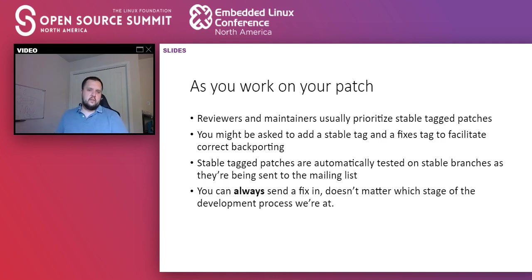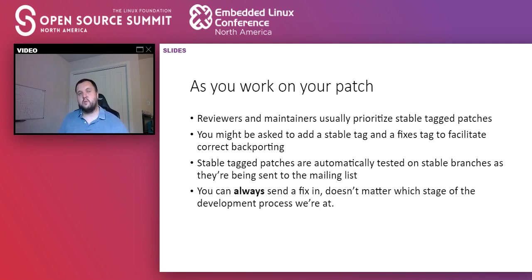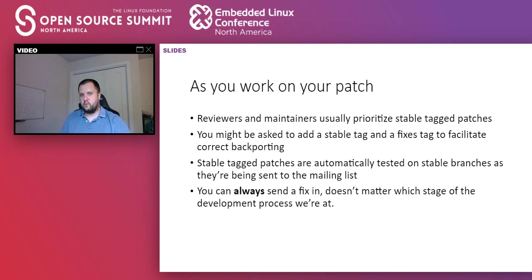The first stage begins as one is still writing the patch. When a patch has a stable tag, maintainers and reviewers will pay more attention to it. They know those patches are more important because they'll quickly end up in users' hands running real workloads. It's important for maintainers to make sure those patches fix the bug in question and do not introduce new regressions. Similarly, if you send a patch that might fix something but it doesn't have a stable or fixes tag, the maintainer might ask you to add one. Stable tags with a version number, or a fixes tag indicating which commit was broken, are very important.